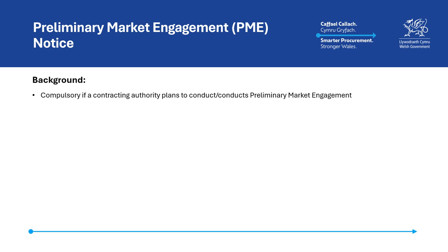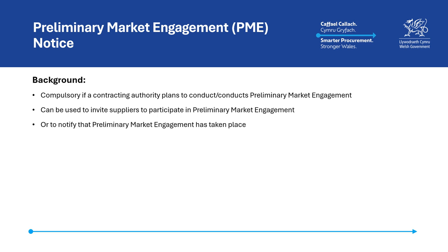This notice is compulsory where a contracting authority has conducted or plans to conduct Preliminary Market Engagement. Whilst an authority is not required to conduct Preliminary Market Engagement, this notice provides a means of making suppliers aware of planned market engagement activity and inviting suppliers to participate. This notice also serves as a means of providing transparency to inform suppliers and the public that Preliminary Market Engagement has taken place.